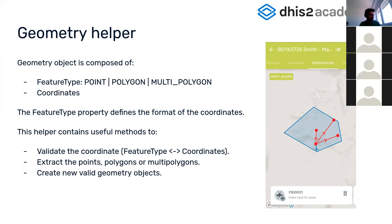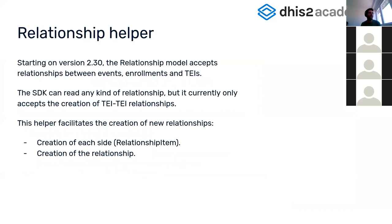Finally, the relationship helper — starting from version 2.30, the relationship model changed a lot. Previously you could only have relationships between a tracked entity instance and another tracked entity instance. Now you can have a relationship between a TEI, enrollment, or event to a TEI, enrollment, or event, making the object more complex. This helper handles all that logic.